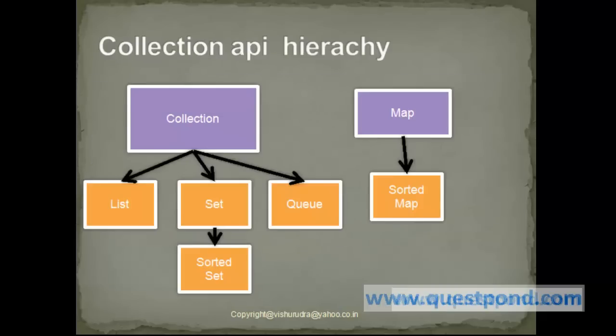Shown is the Collection API in Java. We have the Collection interface with List, Set, and Queue, which implement the collection interfaces and are further implemented by their corresponding concrete classes. A special category among Set is SortedSet, in which data will be in sorted order. Map does not directly come from the Collection interface and has its own existence, while SortedMap is a special type of Map in which data will be in sorted order.